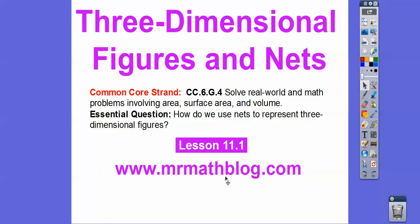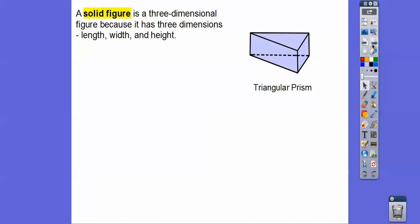Our question here is how do we use nets to represent three-dimensional figures? So a solid figure — this looks like a piece of cheese — is a three-dimensional figure because it has three dimensions: a length, a width, and a height. This is called a prism right here.